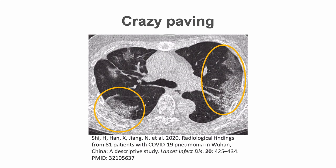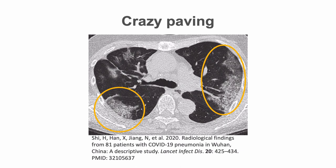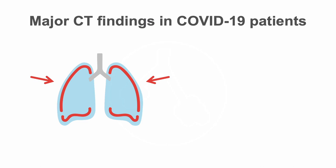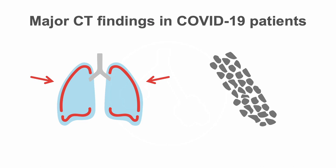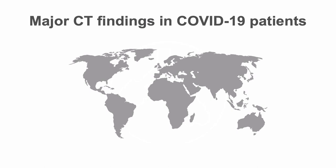This is a typical example of crazy paving appearance, where we see interlobular and intralobular septal thickening superimposed on a background of ground glass opacity in the subpleural lung zones bilaterally. To summarize, the predominant CT imaging findings of COVID-19 include peripheral, focal, or multifocal ground glass opacities affecting both lungs, with consolidations and crazy paving sometimes present later in the disease progression. The lesions often have a geographic distribution.